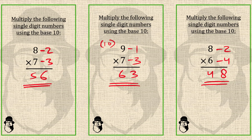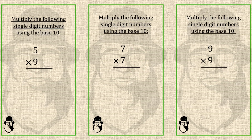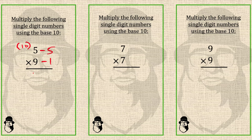Here 5 and 9 — we take base 10. 5 is 5 far from 10, so we write minus 5. And 9 is 1 far from 10, so we write minus 1. The second step is we cross subtract: 5 minus 1 is 4 — that is the left part of the answer. Or we can do 9 minus 5, that will also give us 4. For the right part, we multiply these two deficiencies: 5 times 1 is 5. So 5 times 9 is 45.